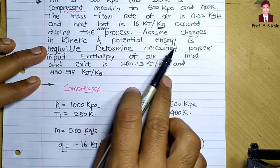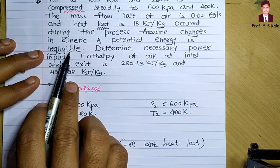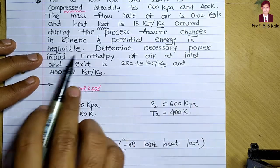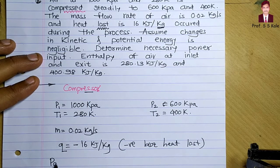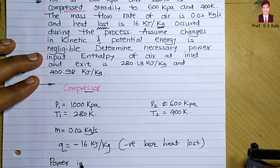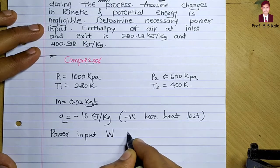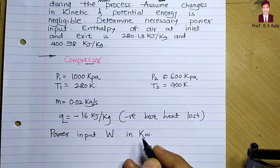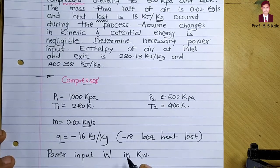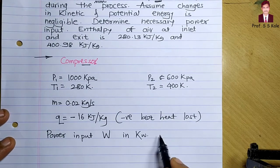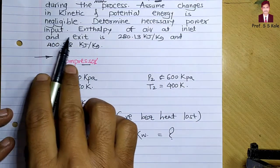Assume changes in kinetic and potential energy are negligible — that's what we consider always. Then we need to determine the necessary power input. Power input is generally denoted by capital W, and we have to determine it in kilowatt.